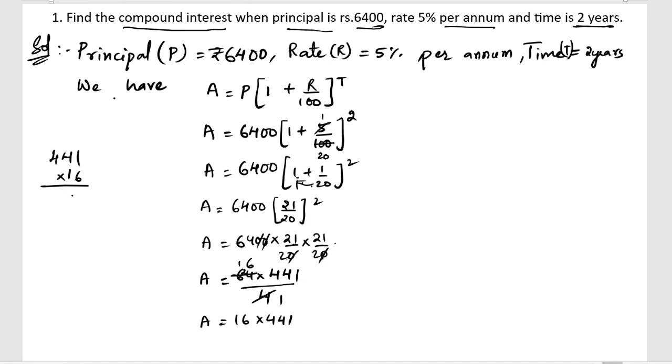so we will get 6 1s are 6, 6 4s are 24, 6 4s are 24 plus 2 is 26, 1 4s are 4, 1 4s are 4, so 6, 4 plus 1 is 5, 4 plus 6 is 10, 4 plus 2 is 6, 6 plus 1 is 7, so 7056.